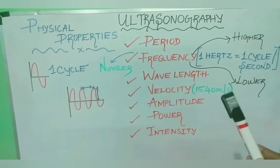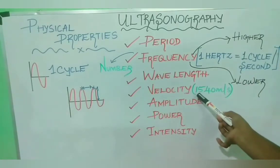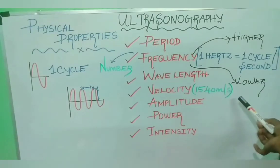Next is velocity. Velocity is nothing but speed of a wave. The average propagation speed for sound in body tissue is about 1540 meters per second.